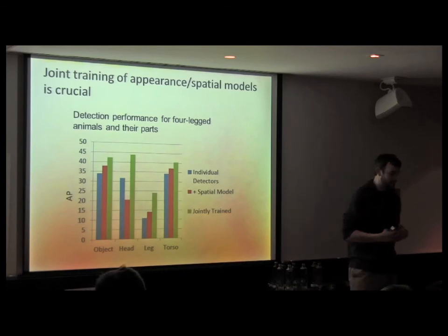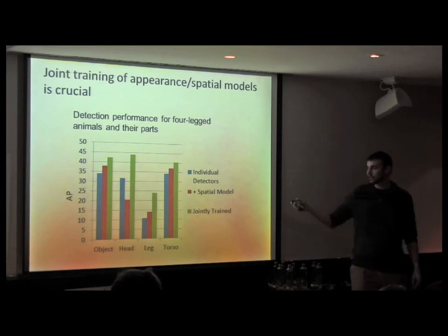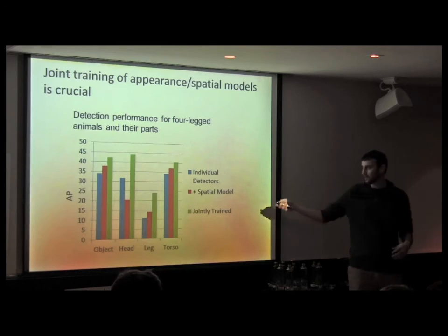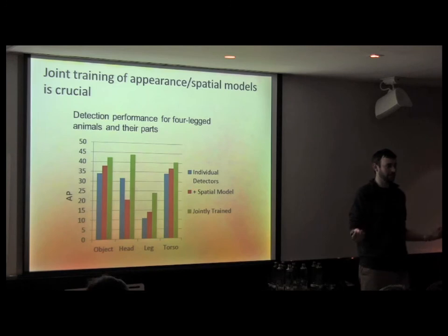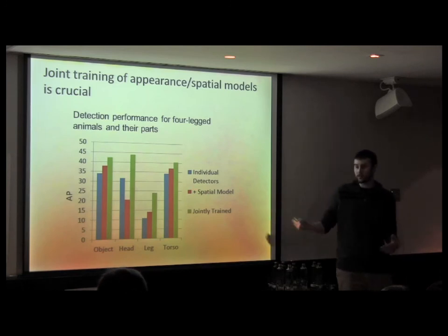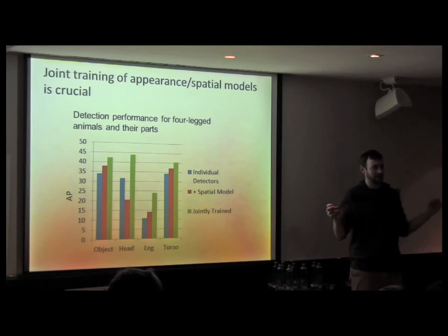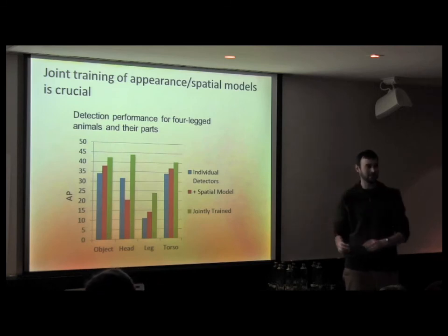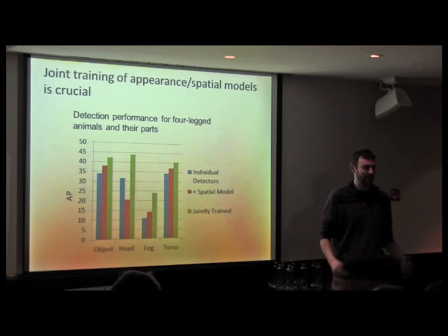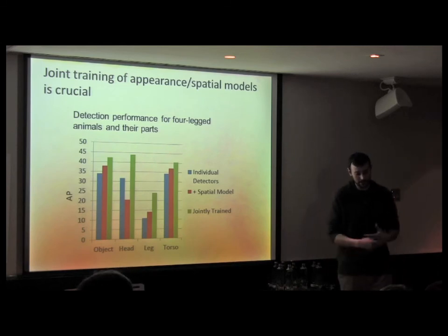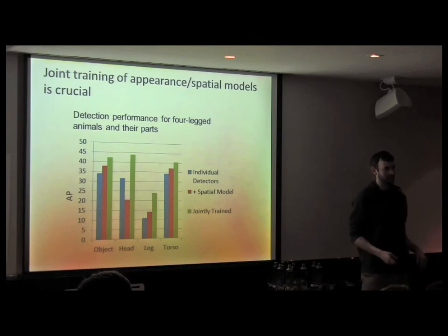From the ablation experiment, joint training of appearance and spatial models is really crucial. Blue bars show results from individually trained detectors; red adds a spatial model on top; green is joint training of everything. It would be nice if we could split the recognition problem into different modules, separately train them, and stick them together — but you'll actually take a pretty big performance hit if you do that. At least to some extent, you really need to learn all these different related prediction tasks together.